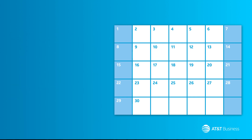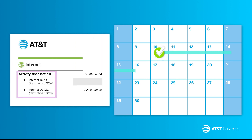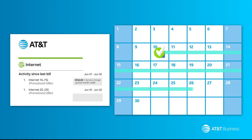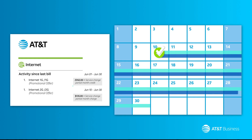Or let's say you change your speed 10 days into your new billing period. In this case, you'll see both a credit and a charge. You'll receive a partial credit for the days the original speed was no longer active and a partial charge for the days the new speed was active.